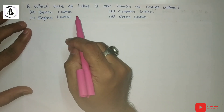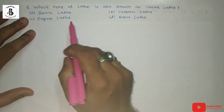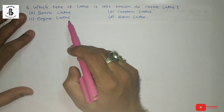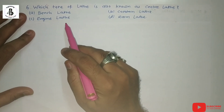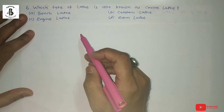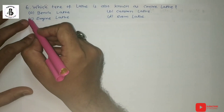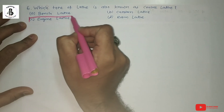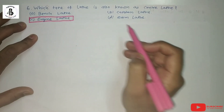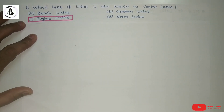The next question: which type of lathe is also known as a center lathe? Option A: bench lathe. Option B: capstan lathe. Option C: engine lathe. Option D: room lathe. The engine lathe is also known as a center lathe — that is the basic lathe machine. If you want to learn about the engine lathe in detail, you should find the link in my description.